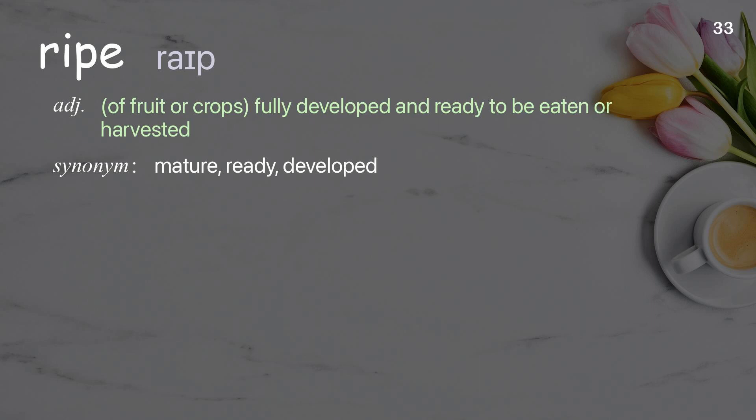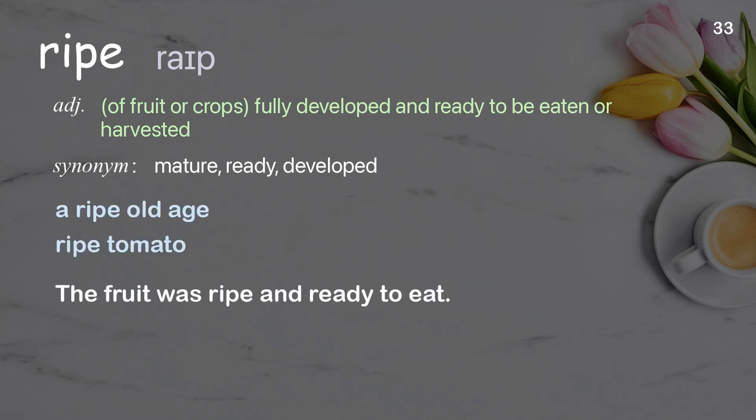Ripe: Of fruit or crops, fully developed and ready to be eaten or harvested. Examples: A ripe old age, Ripe tomato. The fruit was ripe and ready to eat.